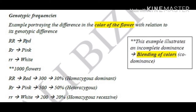Before we start, let's pinpoint a couple of terminologies. Whenever I say R, I mean capital R, and whenever I say small r, I'm referring to the small r. So, RR is going to give us a red color in the flower, R small r is going to give us the pink color, and small r small r is going to give us a white color. We can quickly notice that R small r gives us a pink color — therefore, we've got a blending of colors which signifies codominance, also called incomplete dominance.